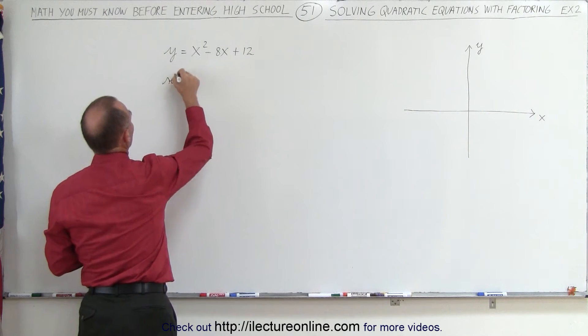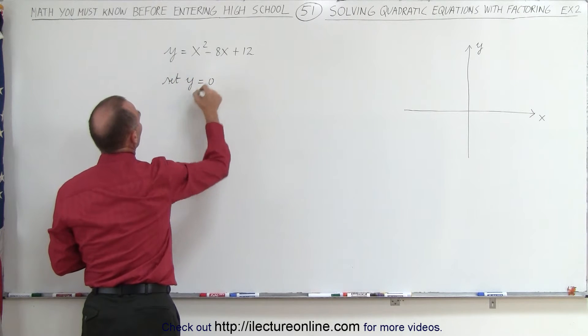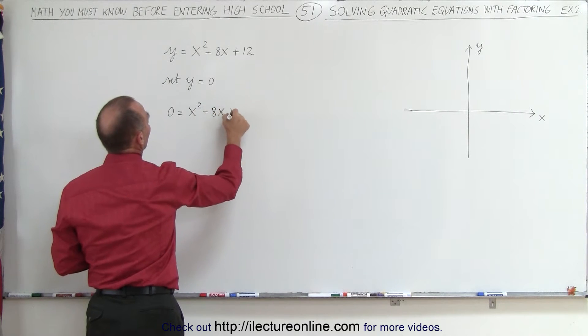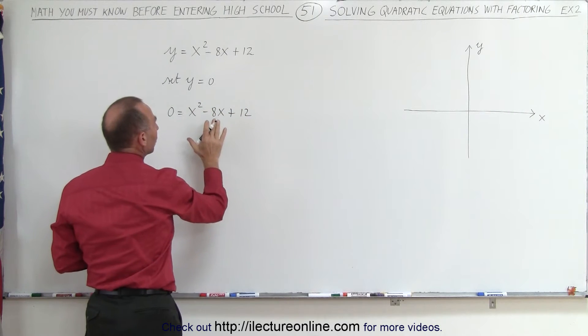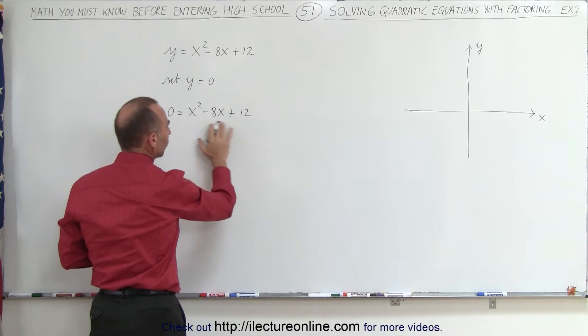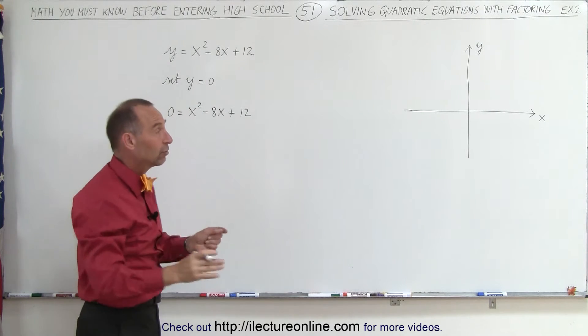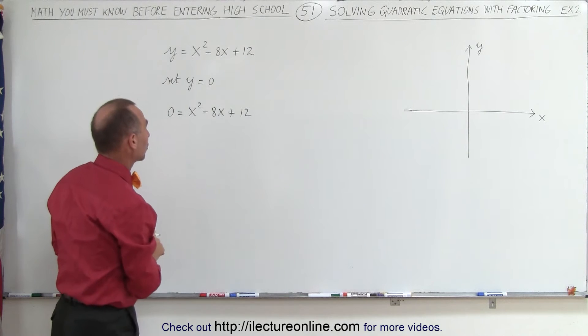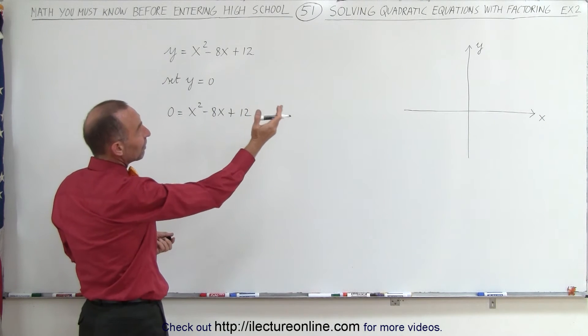So, set y equal to 0, and then we get 0 is equal to x squared minus 8x plus 12, and then when we look for the values of x that make this equation true, we find the places where the graph crosses the x-axis. That's what we mean by solving the quadratic equation. We can do that via factoring.